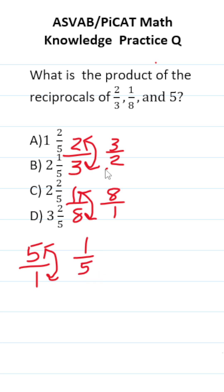So our reciprocals are 3 over 2, 8 over 1, and 1 fifth. Let's find the product of those. Product means to multiply.